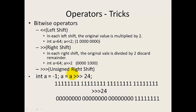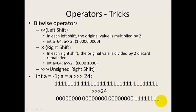For unsigned right shift: when you have negative values and you perform an unsigned right shift, zeros are filled on the left side instead of sign bits. For integer, we have 4 bytes — 32 bits total. If you do a right shift of 24 bits, zeros are added from the left. This makes the result positive. So unsigned right shift fills zeros regardless of sign, making negative values become positive.